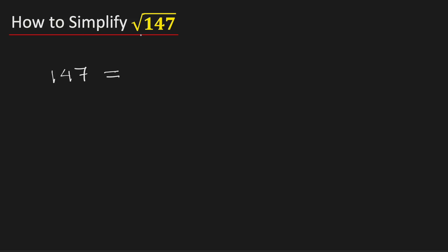In this video we will simplify square root of 147 in its simplest radical form. To do this at first we will write down this number as 49 times 3.